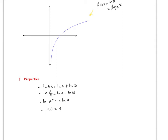Now let's look at the limits. For f(x) = ln x: the limit as x goes to infinity is infinity, which is clear from the graph. Notice you cannot go to minus infinity because the domain is from zero to infinity. Therefore the limit as x goes to zero from the right is minus infinity.